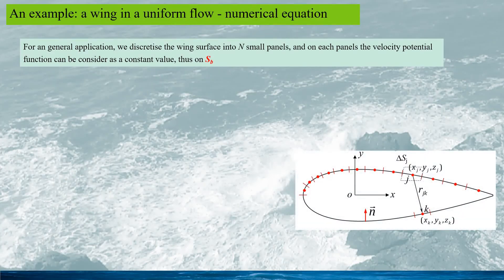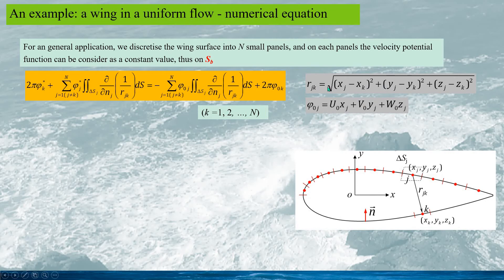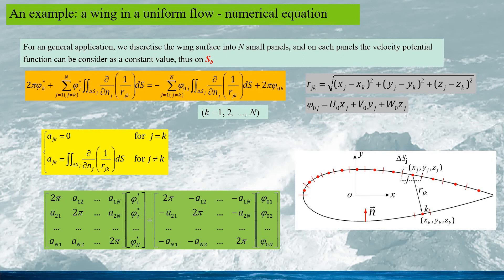For a general application, we discretize the wing surface into N panels, and on each panel the velocity potential function can be considered as a constant. Thus on the wing boundary SB, we have the discrete equation as this. Here it should be noted in the summation, j should not equal to k, and r_jk is defined as this, and the potential function of the uniform flow is given by this. If we define the coefficient a_jk as this, we have the simultaneous equation for solving the disturbance potential function, given by this.